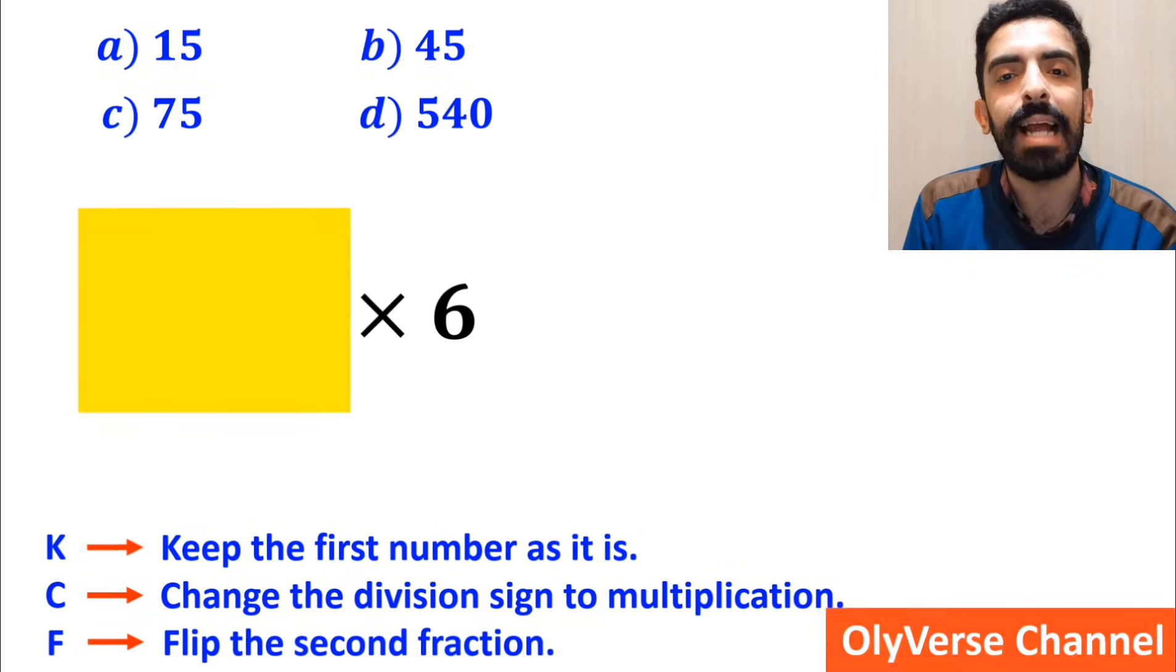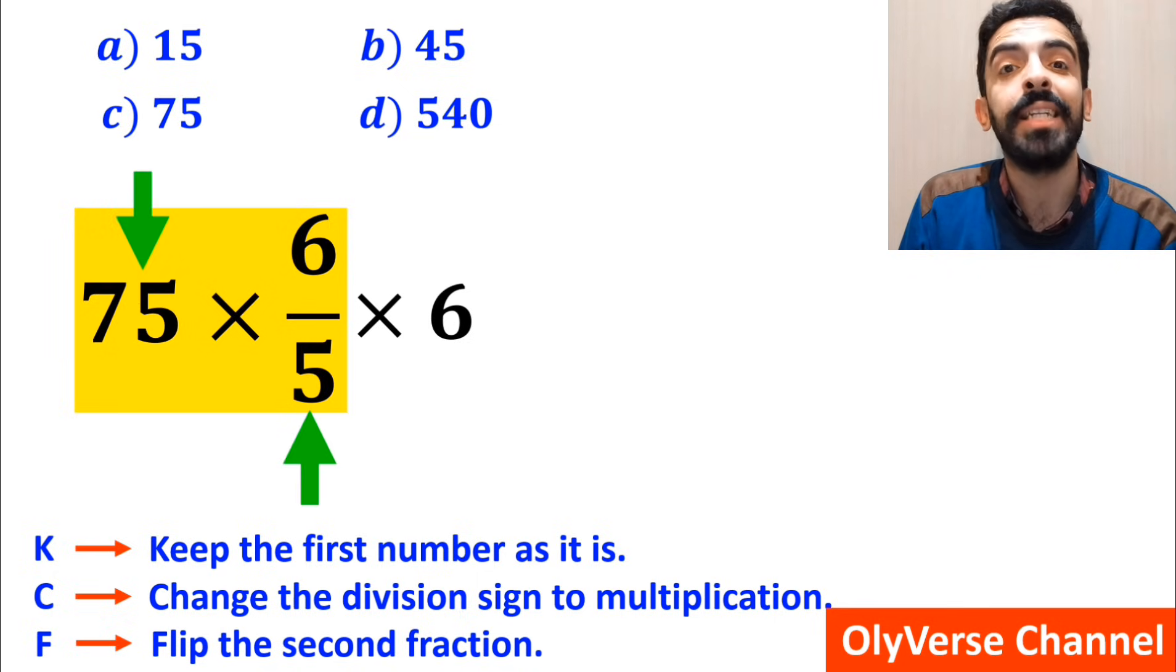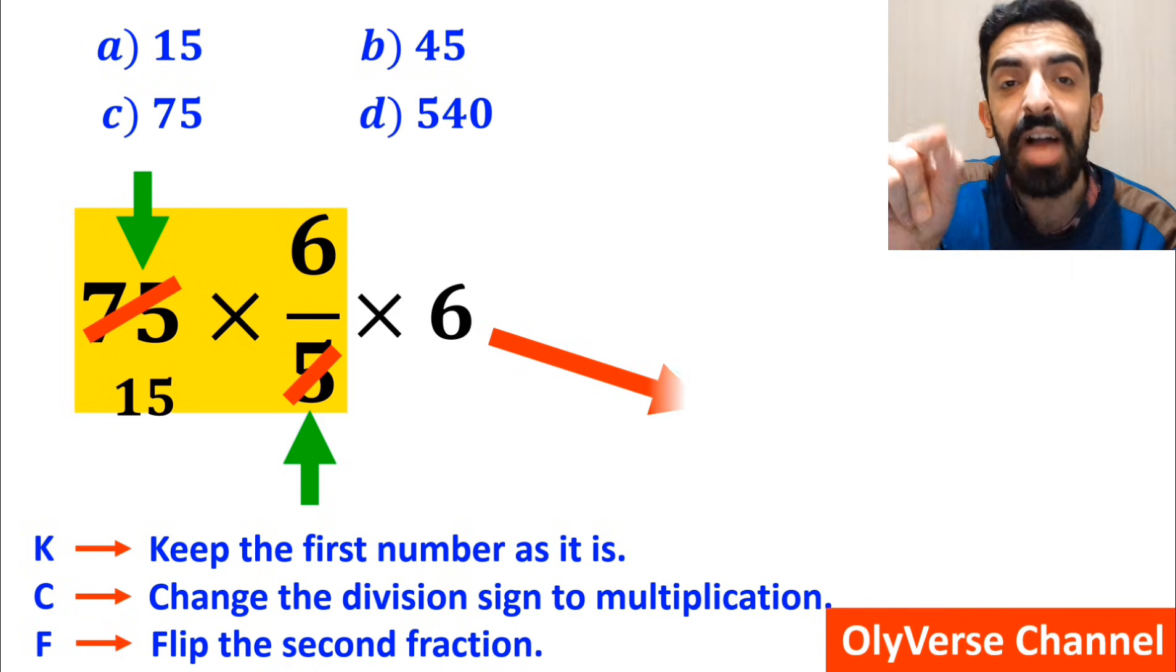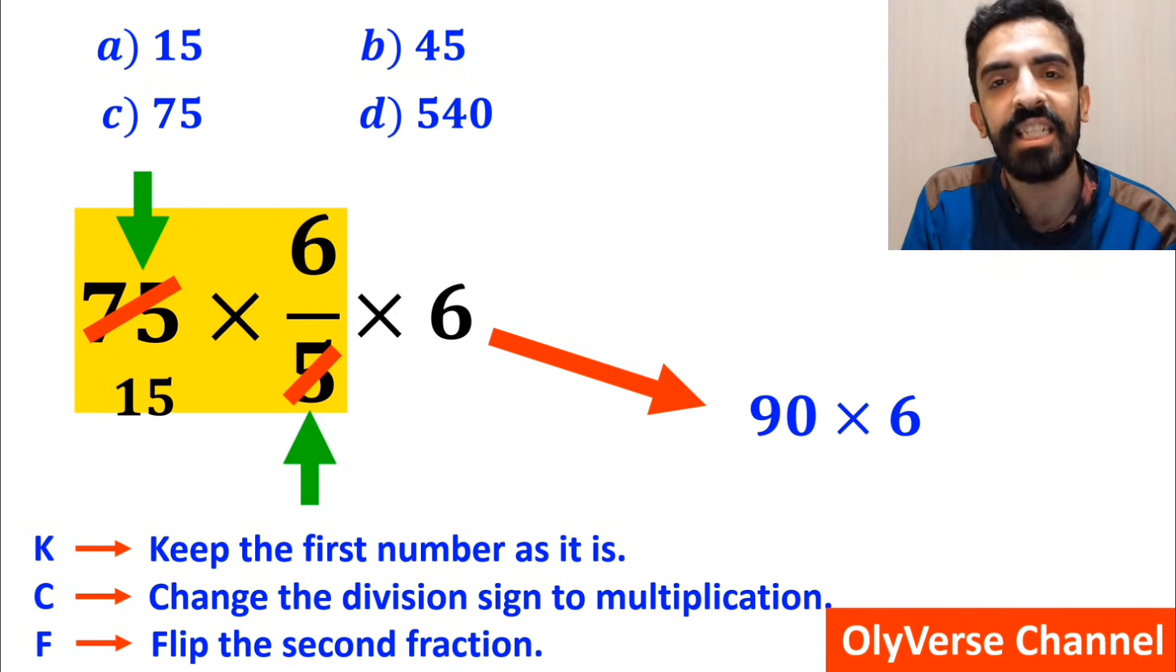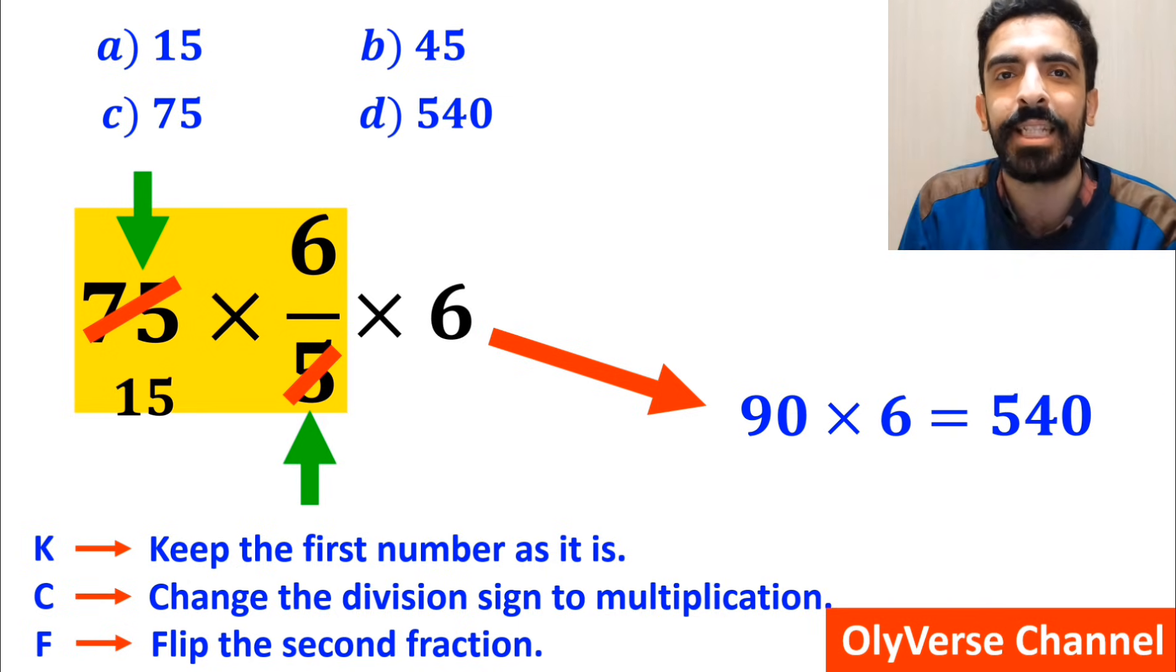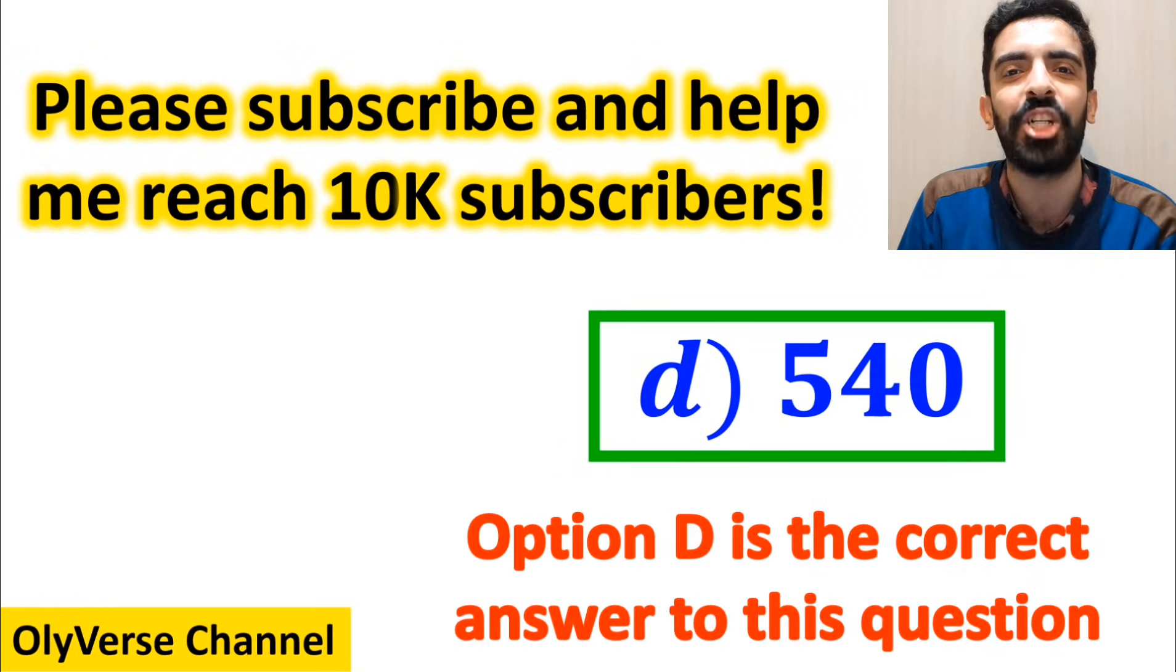So, we remove the highlighted part and replace it with 75 multiplied by 6 over 5. As you can see in the image, the number 75 simplifies with the 5 in the denominator. And instead of this expression, we can write 90 multiplied by 6, which finally gives us the answer 540. That's great! Option D is the correct answer to this question.